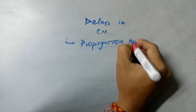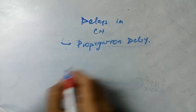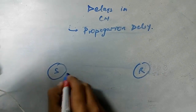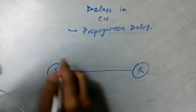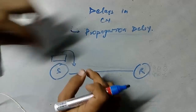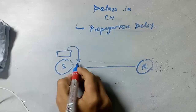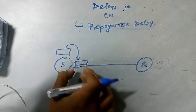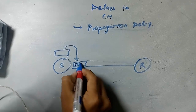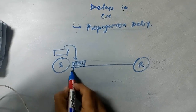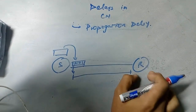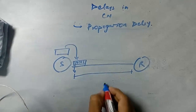Now we'll talk about propagation delay, which is the second type of delay. There is a sender and a receiver. The transmission delay is the time for a packet to come onto the link. Once the packet is on the link, the time taken by the last bit to travel from the link to the receiver is known as propagation delay.